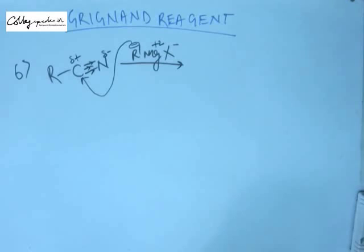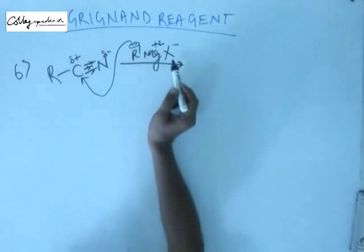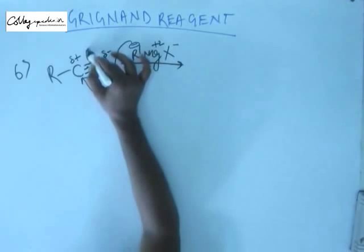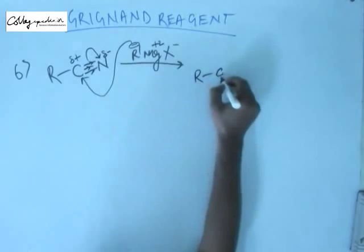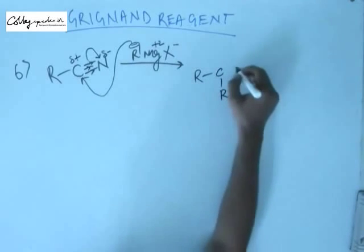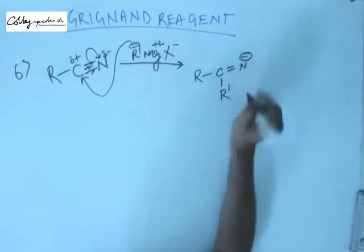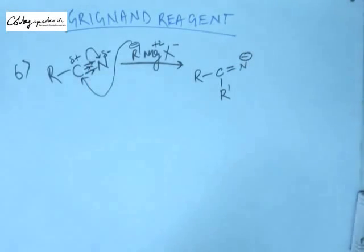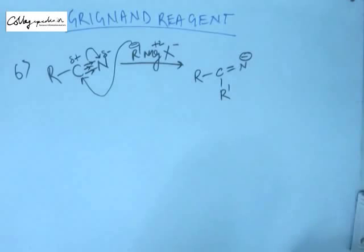This R⁻ will go and attack C⁺. When this happens, carbon will form a new bond with the R group of the Grignard reagent. For that, one of the previous bonds of carbon has to be broken. So when carbon forms a bond with the alkyl part of the Grignard reagent, a negative charge develops on nitrogen because of the breaking of this pi bond. Now we have a negative charge on the carbon-nitrogen system, so the substrate now has a negative charge. There will be no further reaction of Grignard reagent because Grignard reagent is electron-rich and the substrate is also now electron-rich. Reaction will stop at this stage.